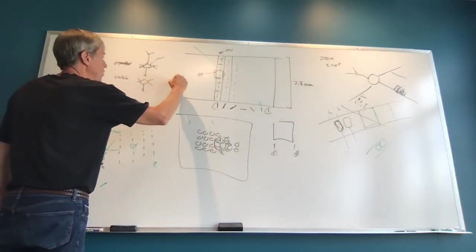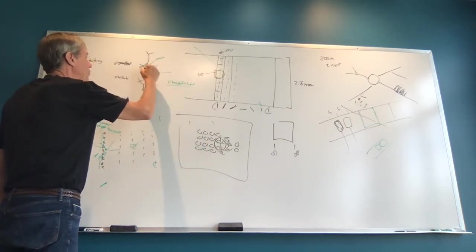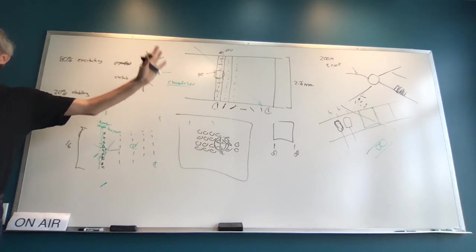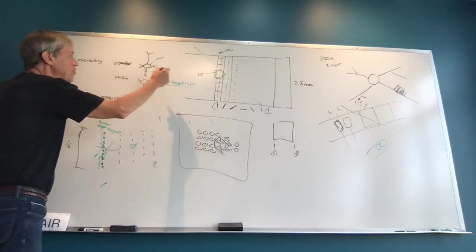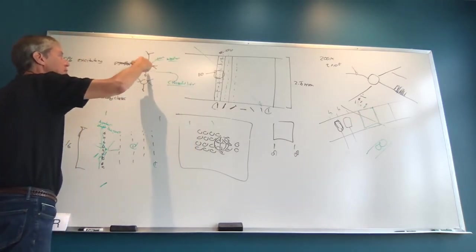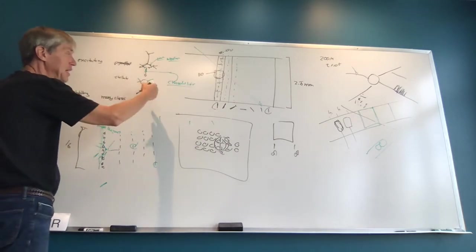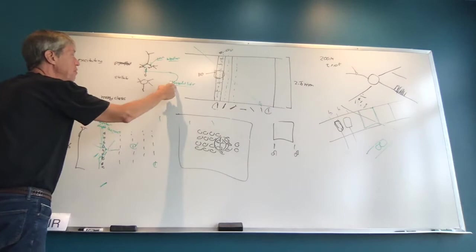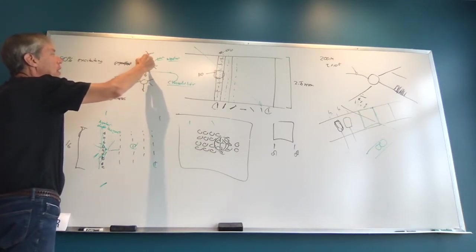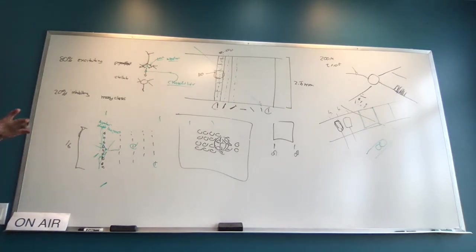There's another type called the chandelier cell, which we have no idea what it's for. It's called a chandelier cell because it makes connections along the beginning of the axon, and it looks like little candles — a whole bunch suspended out like a chandelier. Why would a chandelier cell do this while a basket cell or bipolar cell connect near the cell body? Basket cells and bipolar cells would prevent a cell from firing at all — it would never generate a spike. But it's possible — and I'm totally making this up — that the chandelier cell, depending on where those synapses form, might allow the cell to generate a spike but not propagate it down the axon.